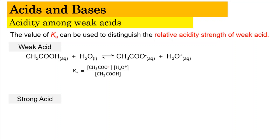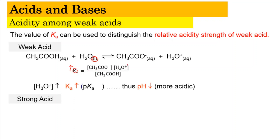From here you can write the Ka value, in which Ka refers to the dissociation constant of the weak acid. So Ka equals [CH3COO⁻] multiplied by the concentration of the hydronium ion, divided by the concentration of the acid. Water is not included in the expression because water exists as a pure liquid here. When the Ka value is higher, the H3O⁺ concentration will be higher, which determines the acidity.